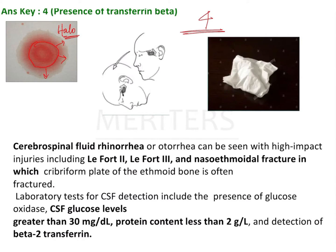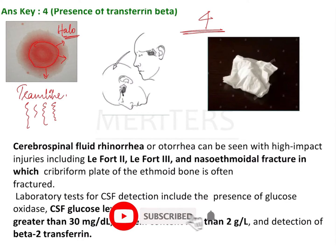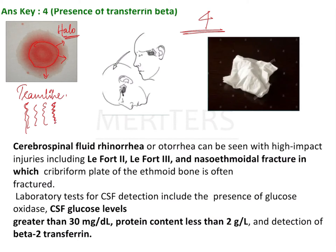The second sign is the tram-like pattern, seen when leakage from the nose is observed on the patient's pillow. You will see a pattern where the convolutions keep growing farther apart from each other — initially close together, then progressively more distant. This is called the tram-like pattern.